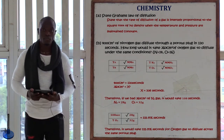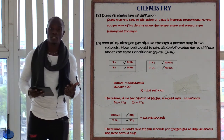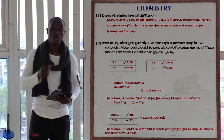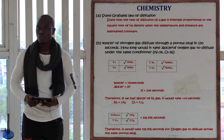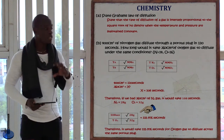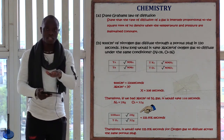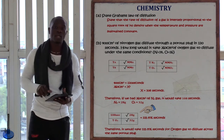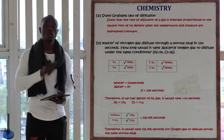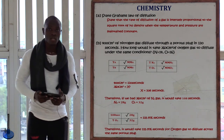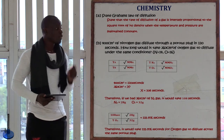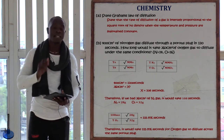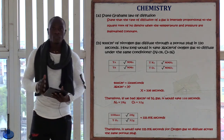Now substituting into the formula: time of nitrogen divided by time of oxygen equals the square root of molecular mass of nitrogen divided by the square root of molecular mass of oxygen. So 108 seconds divided by the time of oxygen equals the square root of 28 divided by the square root of 32. Doing all the calculations correctly, the time taken for oxygen is 115.976 seconds.